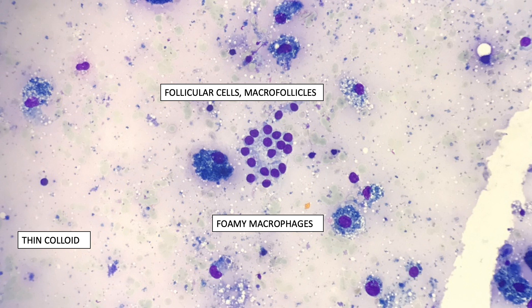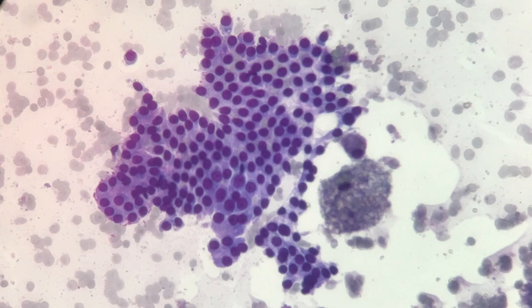You can often see cells with scant cytoplasm with an atrophic appearance, and also thin colloid in the background and foamy macrophages.